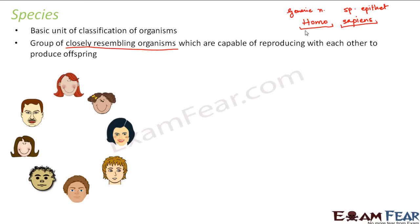Some human beings might have curly hair, some straight hair, some black hair, some brown eyes — those differences exist. So it is not said that all organisms belonging to a species will be exactly similar; they will resemble very closely. Every human being has the basic structure similar — two eyes, one nose, one lip, two hands. They have small differences, and that is why they look different, but all human beings belong to the same species: Homo sapiens.